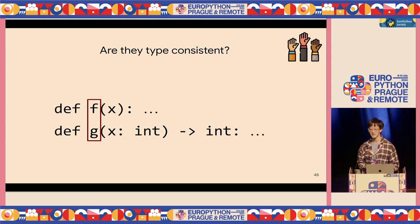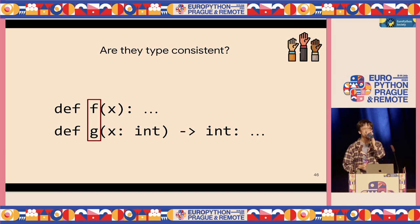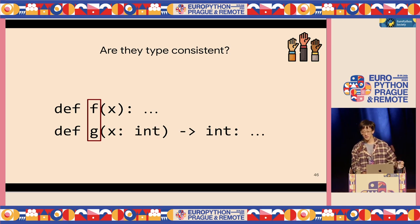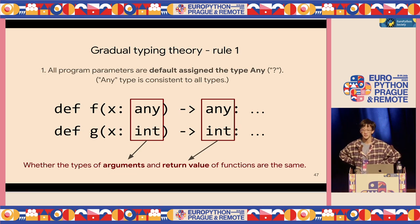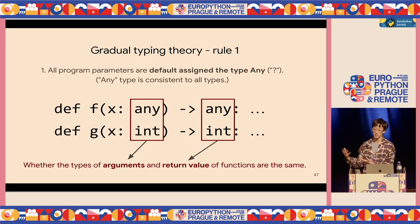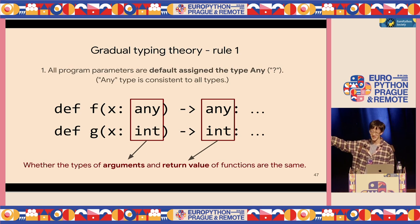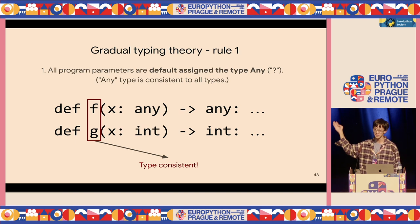Second question: do you think these two functions are type consistent? Again, rule number one — if you don't assign types to function arguments and return value, they're assigned any type. When we compare two functions for type consistency, we check the argument and return value types. Any type is consistent with any type, and any type is consistent with integer type. So these two functions are type consistent.